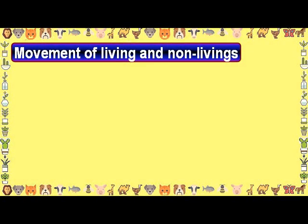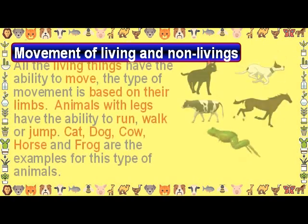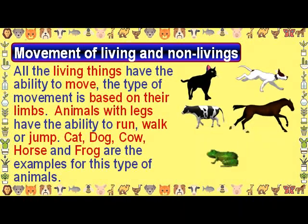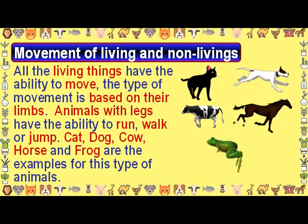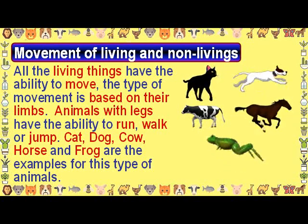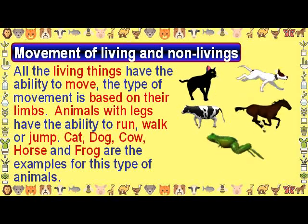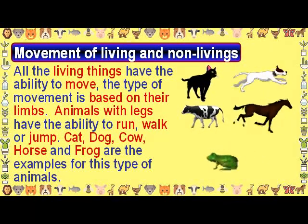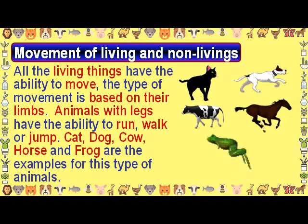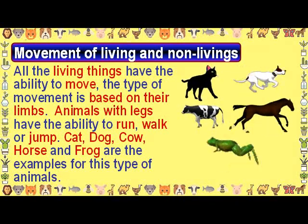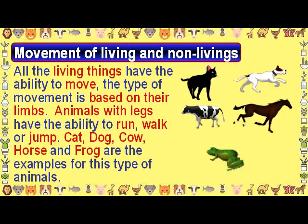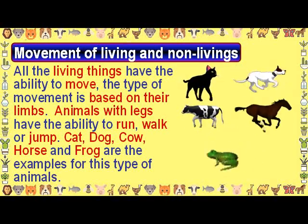Movement of living and non-living things. All living things have the ability to move. The type of movement is based on their limbs. Animals with legs have the ability to run, walk, or jump. Cat, dog, cow, horse, and frog are examples of this type of animal.